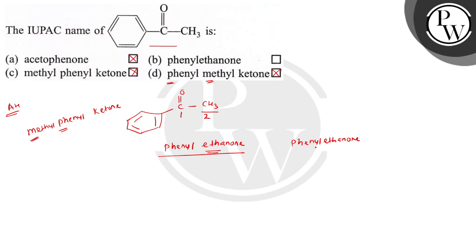Watch out. The Methyl Phenyl Ketone option is a correct naming of this compound, but it is not IUPAC. This is the common name. Acetophenone is also the common name. The IUPAC name is Phenyl Ethanone. The correct option is B. I hope you understood well. Best of luck.